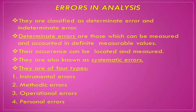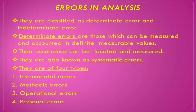So what are these errors that we will see now? Errors in analysis are of two types: determinate error and indeterminate error. Determinate errors are those which can be measured and accounted for in a definite measurable value. In simple language, the location of determinate error can be found out — we can find out where it came from and how it came, and we can also minimize it.